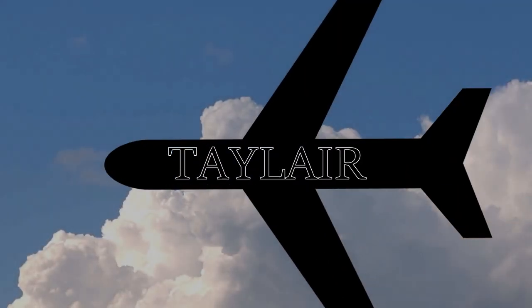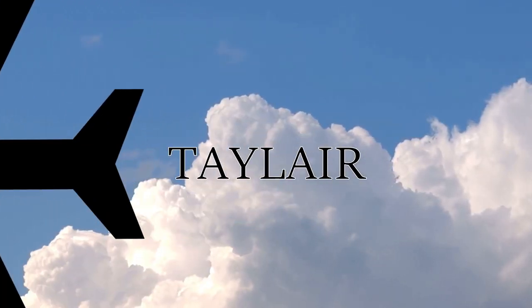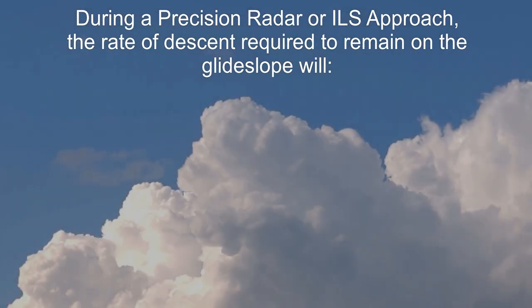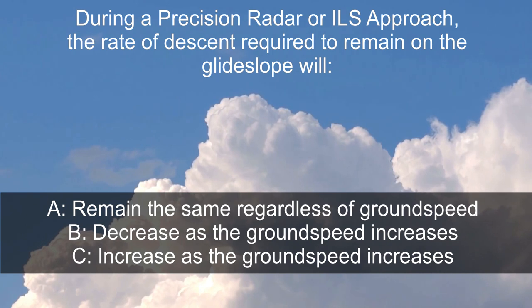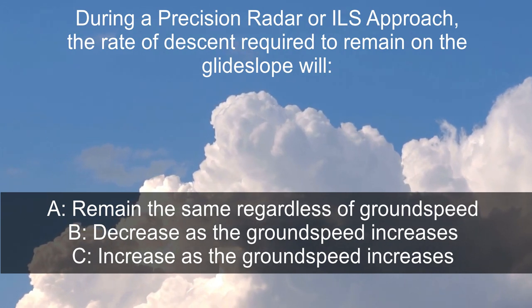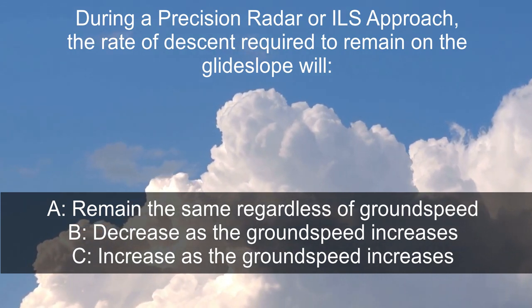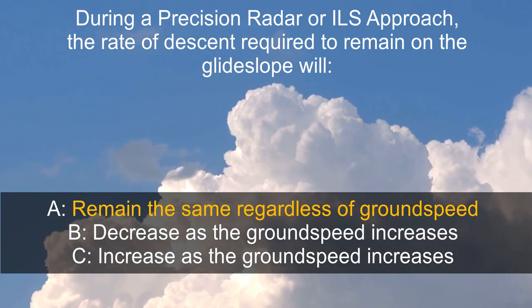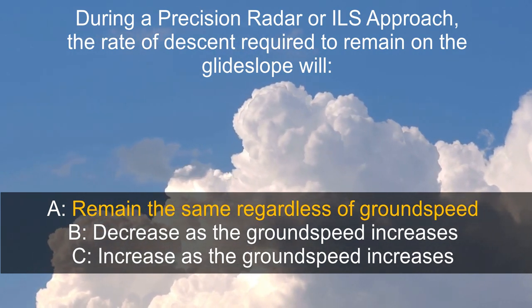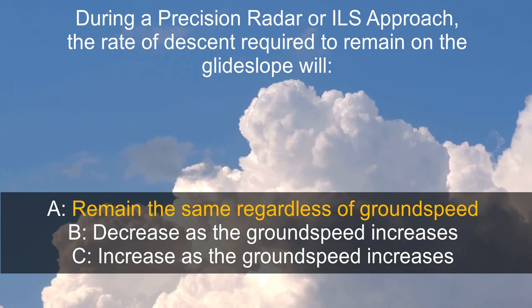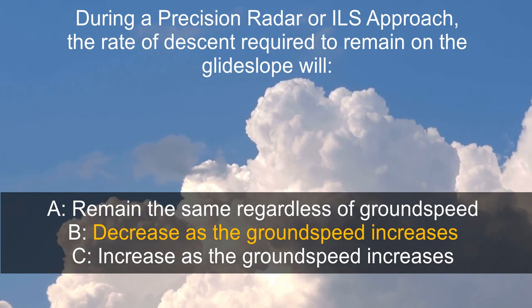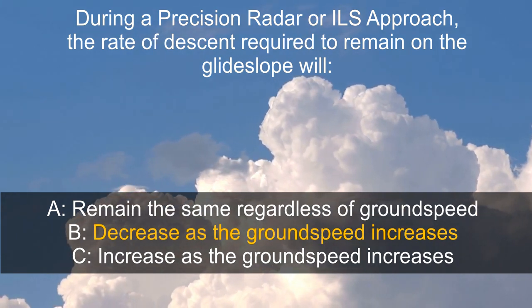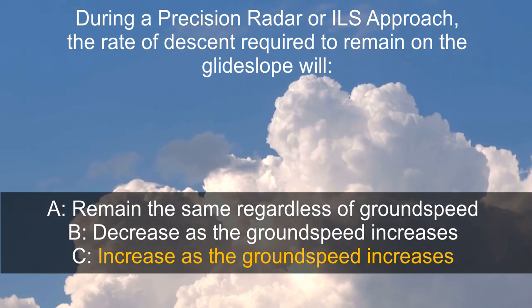Welcome back to Taylor, here's another FAA theory question. During a precision radar or ILS approach, the rate of descent required to remain on the glide slope will: A. Remain the same regardless of ground speed, B. Decrease as the ground speed increases, or C. Increase as the ground speed increases.